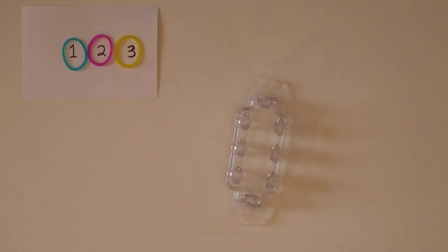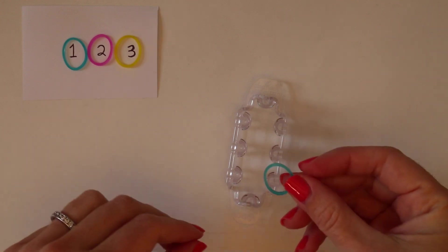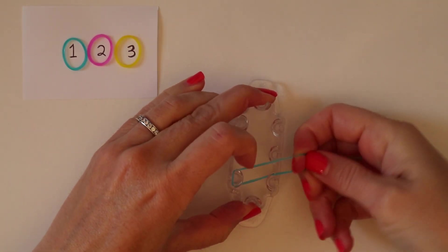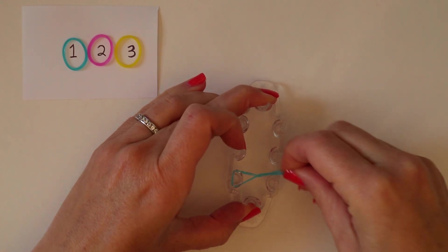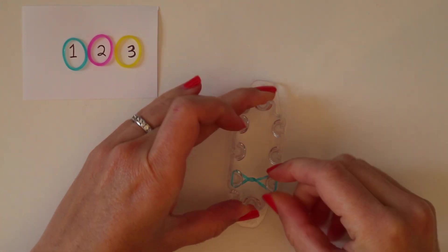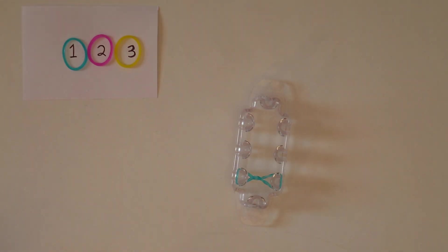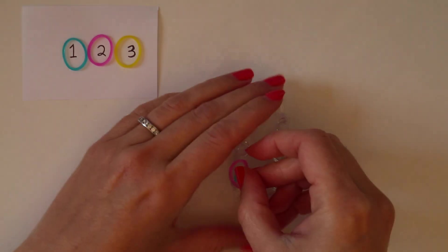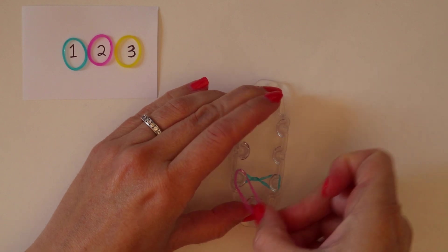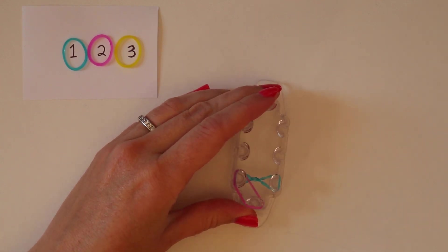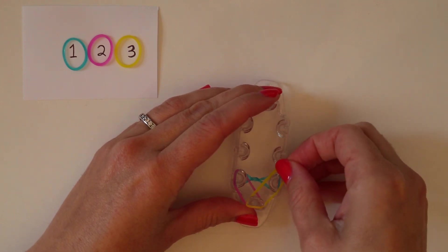So, our first step is to take a band in color one and stretch it across the back two pegs, twisting it twice. Then, take a rubber band in color two on the left side, and a rubber band in color three on the right.